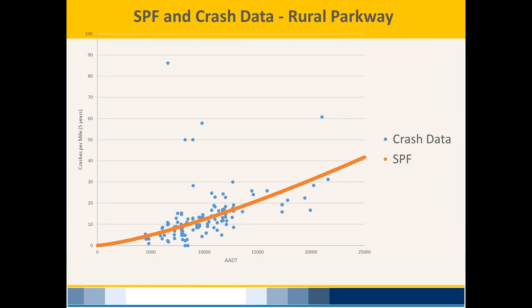A site with a CRF above 1 has more crashes than average; below 1 means fewer crashes than expected. The big difference is that SPFs are not linear, while CRF assumes crash rate increases linearly as ADT increases. Research behind SPFs shows that crash performance is not linear — that's why we're moving to SPFs. In this example, crashes increase somewhat exponentially as ADT increases.